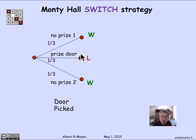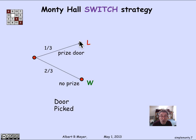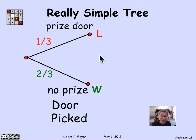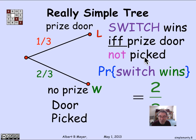It doesn't matter in distinguishing between whether you pick non-prize door one or non-prize door two — you win in both cases. Really, all we care about: we could have condensed the entire tree down to one where either you pick the prize door with probability one third, in which case you're guaranteed to lose no matter what happens, or you pick the non-prize door, which you do with probability two thirds, in which case you win no matter what happens. And that is a really simple tree. What we can read off immediately is that with the switch strategy, the probability of winning is two thirds. So the switch wins if and only if the prize door is not picked, which means the probability that switch wins is two thirds — which is what we already figured out using the more complicated tree, but this way of getting at it is a lot clearer.